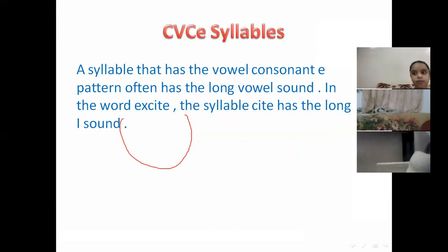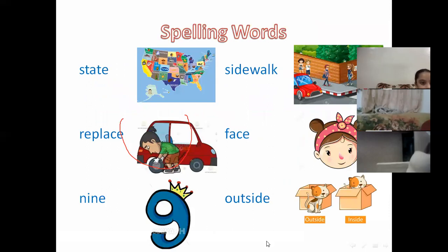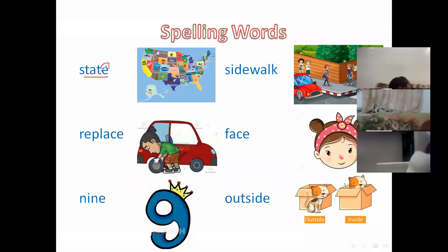A syllable that has the vowel-consonant-E pattern often has the long vowel sound. For example, the word 'excite' has the long I sound. Look at 'state' — states are places like cities but bigger. In the United States we have many states, and inside the states we have cities. The word 'state' follows consonant-vowel-consonant-final E, giving us a long A sound. 'Replace' means to take the place of something else — he will replace the wheel with a new one.